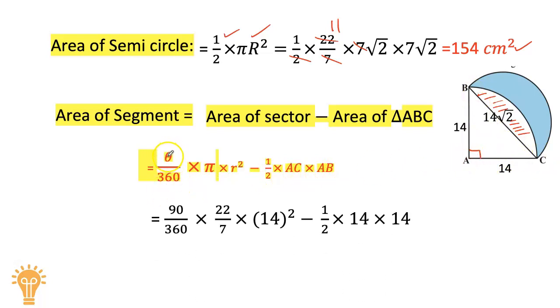Let's substitute: θ = 90°, so 90/360 × 22/7 × 14² minus ½ × 14 × 14. After doing the cancellations, we get the result 56 cm². So now we have the area of the segment as well as the area of the semicircle.